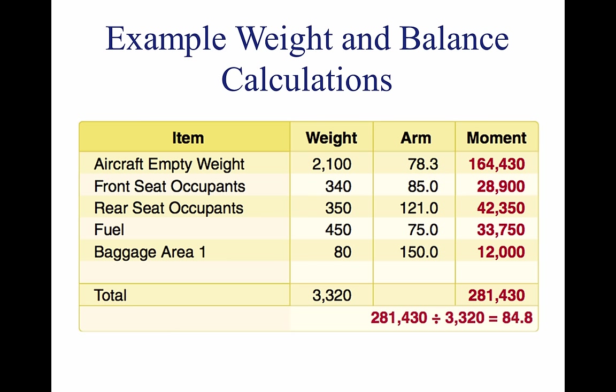There are various methods for determining the loaded weight and CG of an aircraft, including the computational method and methods using graphs and tables provided by the manufacturer. The computational method involves: (1) listing the weight of the aircraft, occupants, fuel, and baggage—aviation gas weighs 6 pounds per gallon; (2) entering the moment for each item, where weight times arm equals moment; (3) finding the total weight and total moment; and (4) dividing the total moment by the total weight to determine the CG.